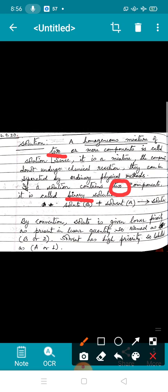If we have only two components in a solution, then we call it a binary solution, out of which the component which is present in lesser quantity is called solute, and the one which is present in the larger quantity we call it solvent.